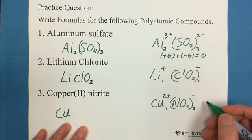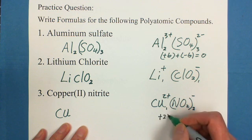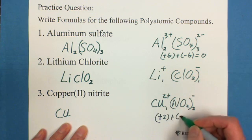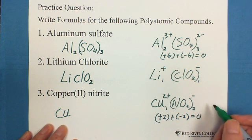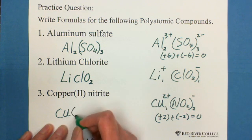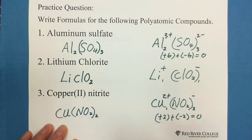And copper, only 1 copper ion. So we have positive 2 plus negative 2 equals 0, balanced. The formula is Cu(NO2)2. Because it's 1, we don't need to put a subscript.